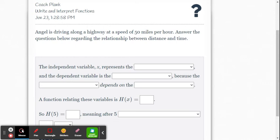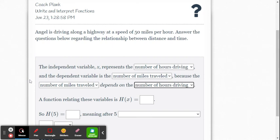Alright. So let's take a look at this. Independent quantity X represents, which one's time? The number of hours of driving. And the dependent quantity is number of miles traveled because the number of miles traveled depends on how long you've been driving. The longer you drive, further you go.